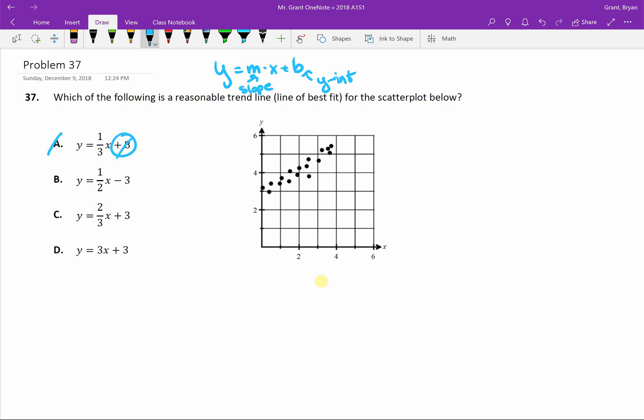B says start our line at negative 3. Well that's all the way down here and then go. That doesn't go through the points either. Not B.